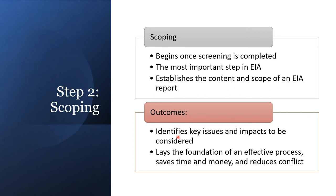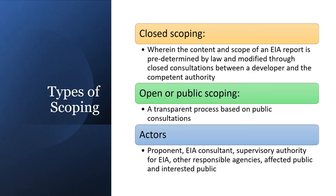The outcomes of scoping are: it identifies key issues and impacts to be considered, lays out the foundation of an effective process, and saves time, money, and reduces conflict. Types of scoping include closed scoping — where the contents and scope of an EA report are predetermined by laws and modified through closed consultations between the developer and the competent authority — and open or public scoping, a transparent process based on public consultation.